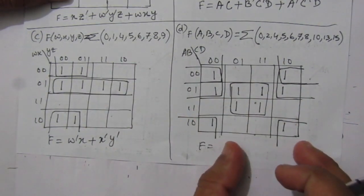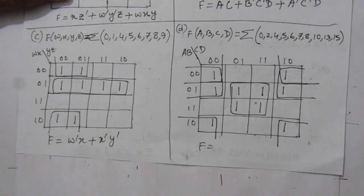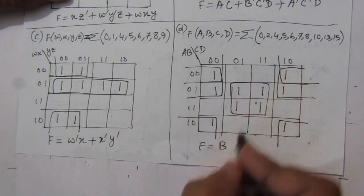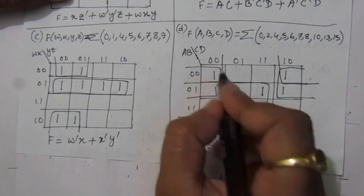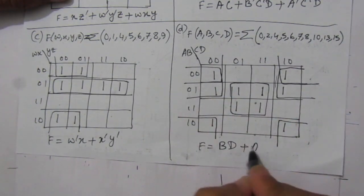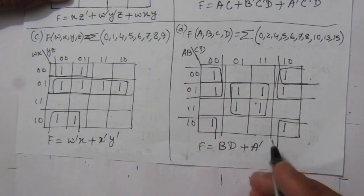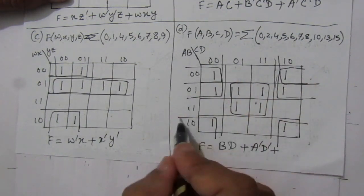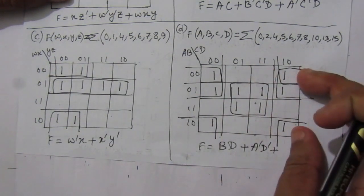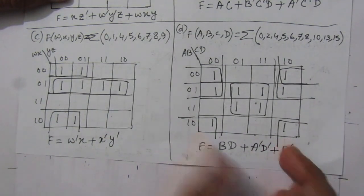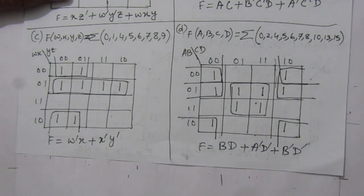For the first term, from one side we get b and from the other side d, giving bd. For the second term, we get ā and d̄, giving ād̄. For the third term, the two rows give b̄ and the two columns give d̄, giving b̄d̄. So the simplified Boolean expression after minimization is bd + ād̄ + b̄d̄.